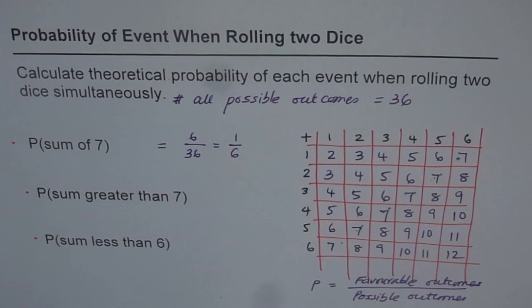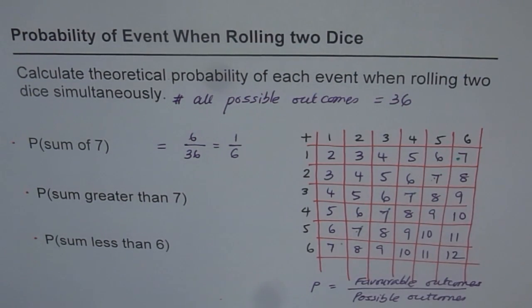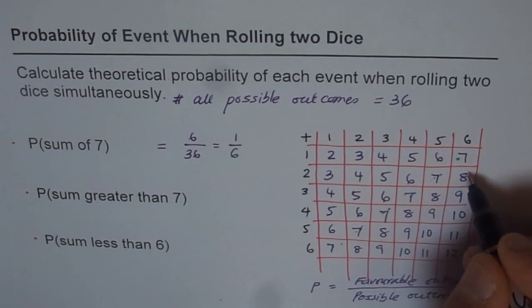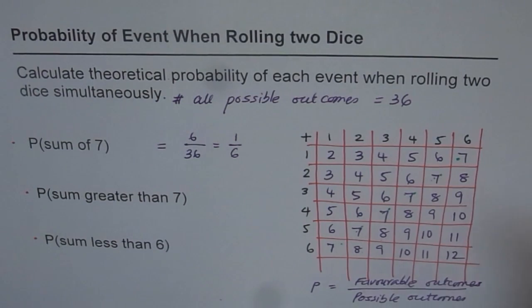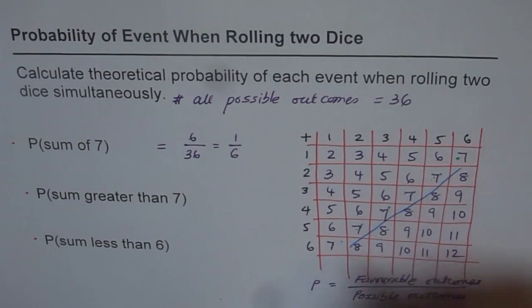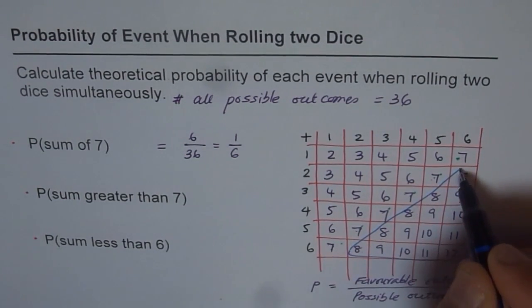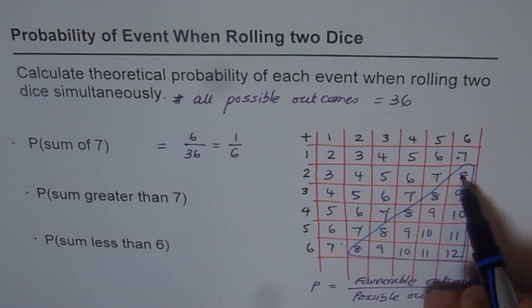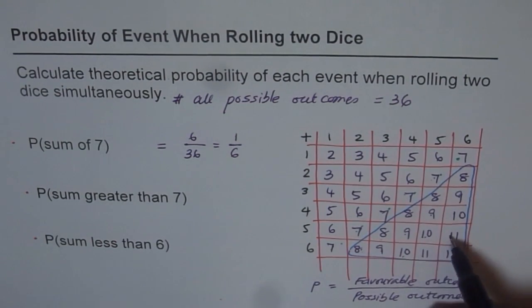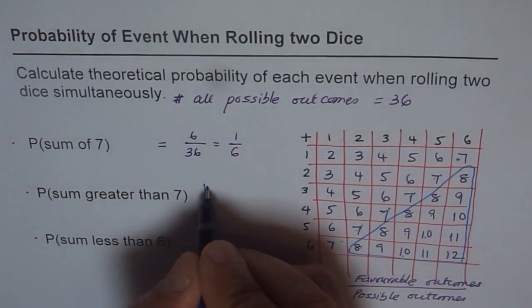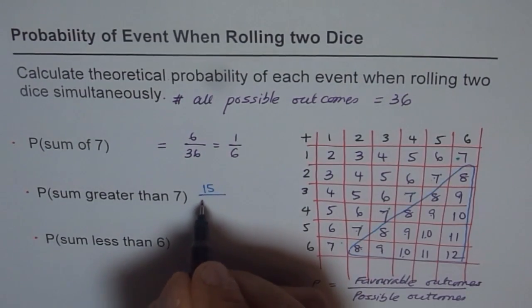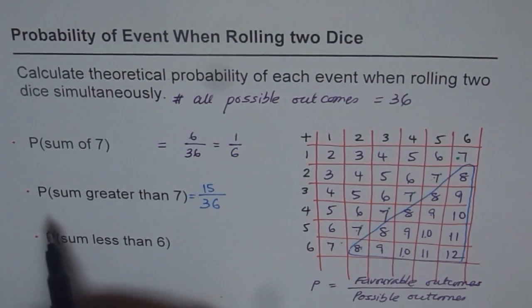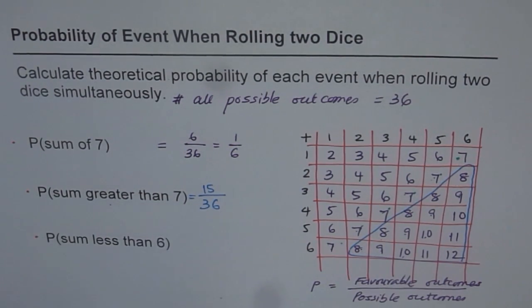Now, what is the probability of getting a sum greater than seven? The numbers greater than seven are eight, nine, ten, eleven, twelve. Let me mark these numbers. These are all the numbers which are greater than seven when you add. Counting these: one, two, three... fifteen. So we get fifteen out of thirty-six. That is the probability when sum is greater than seven.